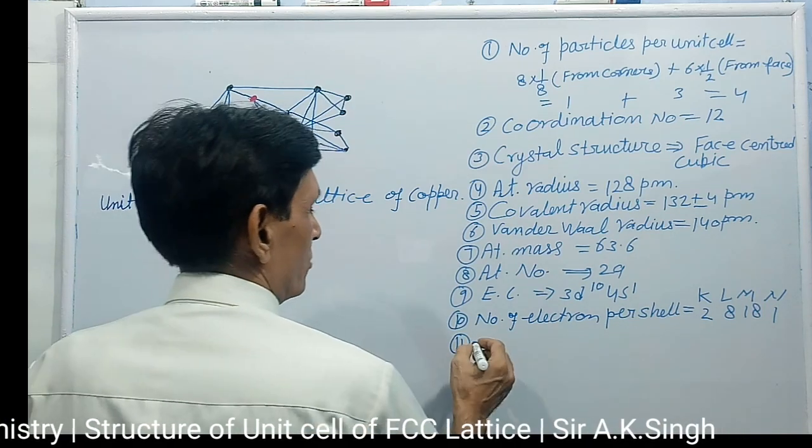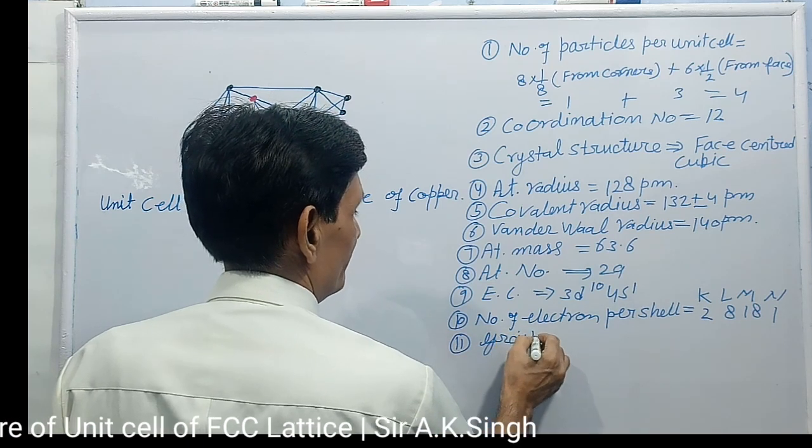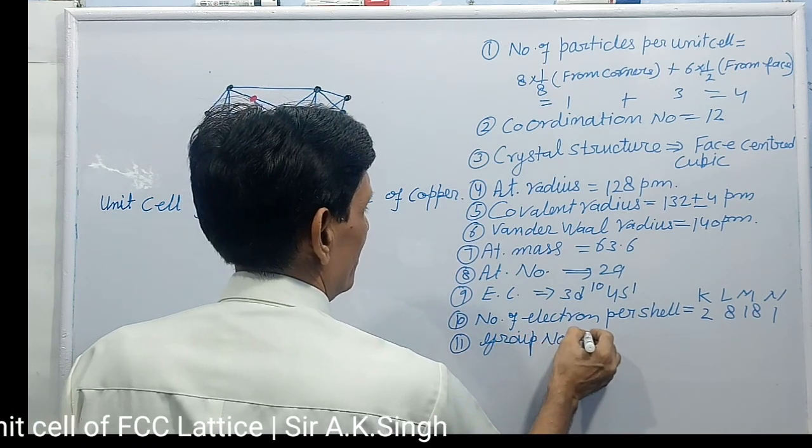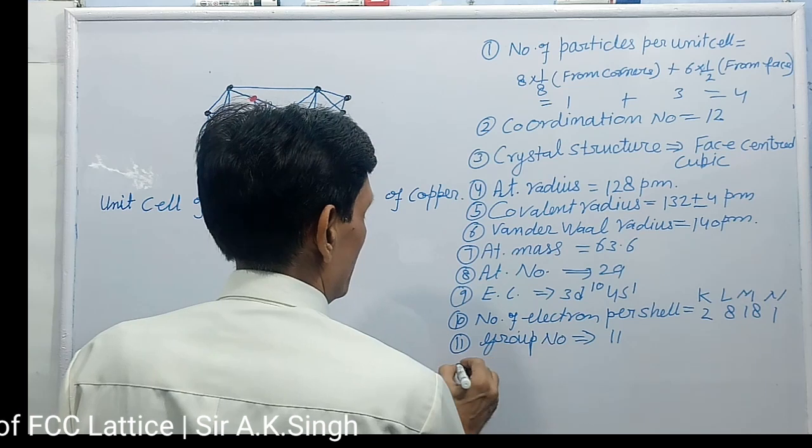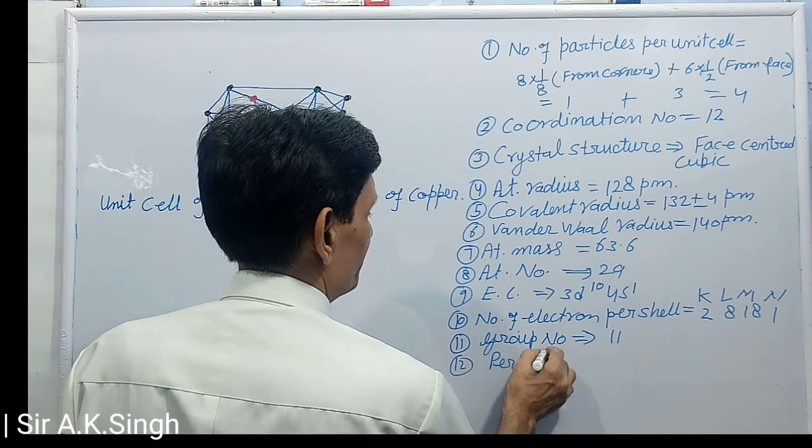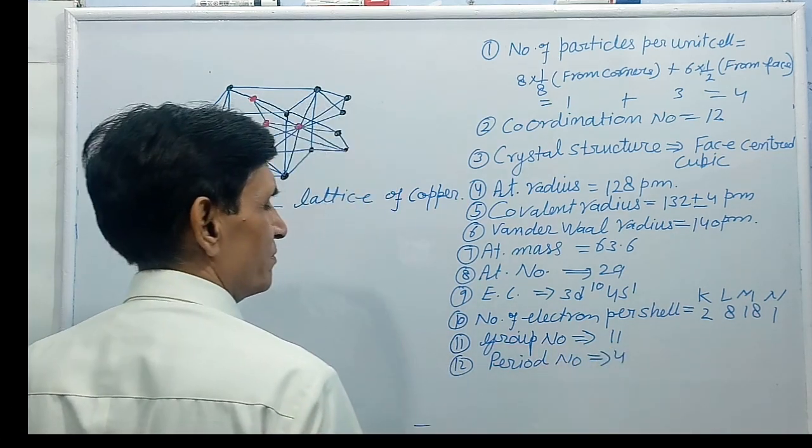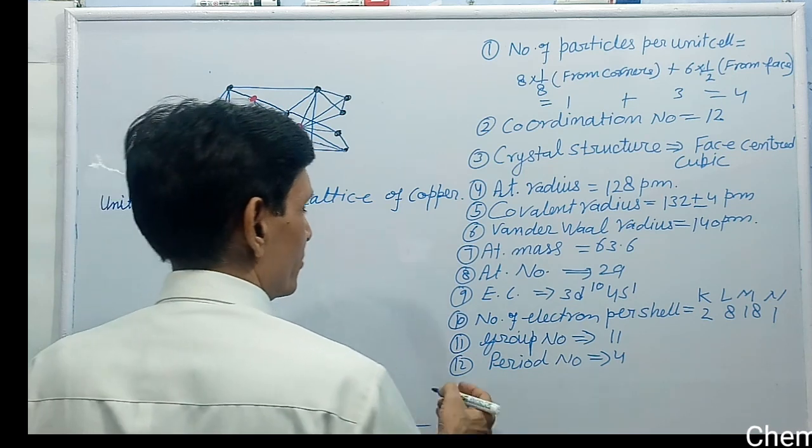Next, group in the periodic table, group number in the periodic table, group number is 11 and period number in the periodic table is 4, period number is 4. Next.